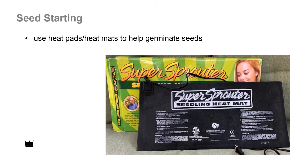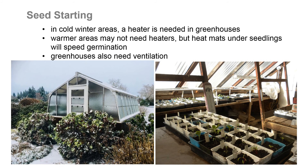Heat pads or heat mats are very useful in helping to germinate seeds. They're especially useful for seeds like pepper or eggplant that require fairly warm temperatures. In cold winter areas, a heater is needed in greenhouses, but in warmer areas it may not be needed. We still may want to put heat mats under seedlings to help speed germination. Remember that greenhouses also need ventilation on warm days.